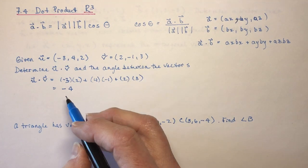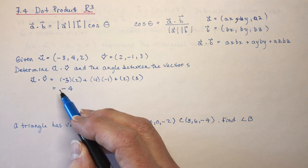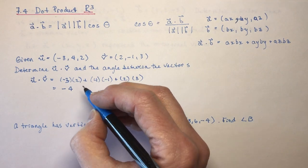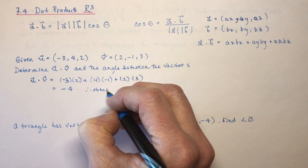Now, if you recall, if your dot product is negative, that means the angle between the two vectors is going to be obtuse.